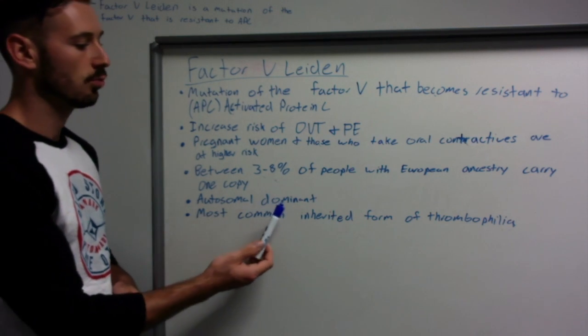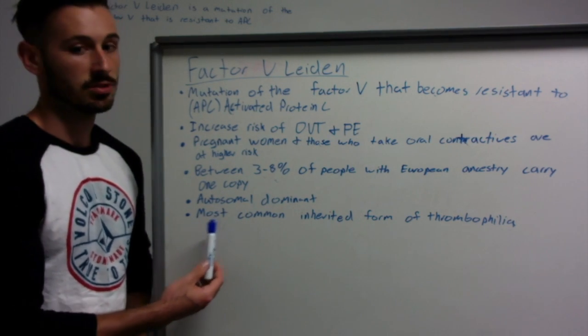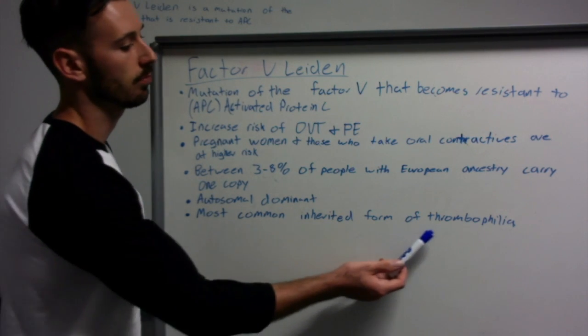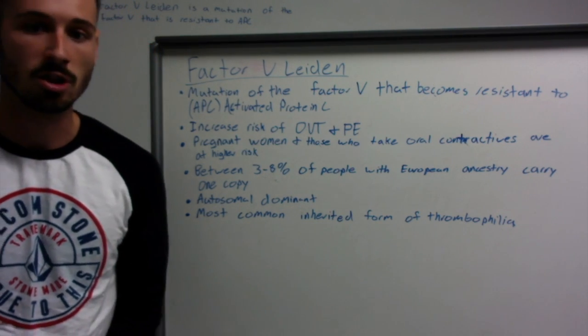It is an autosomal dominant form of inheritance and it is the most commonly inherited form of thrombophilia, and thrombophilia is just excessive clotting.